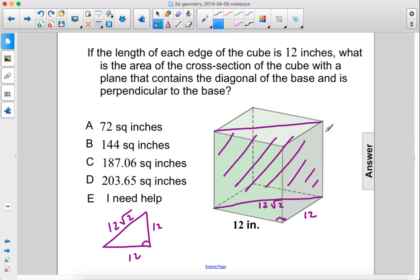So to find the area of this rectangle, we know this edge here is 12, since this is a cube, and this diagonal is 12 times the square root of 2, so the area would be 12 times 12 times the square root of 2.